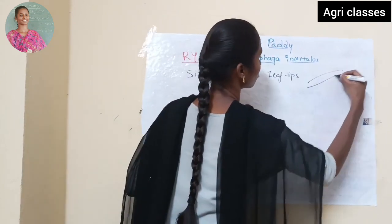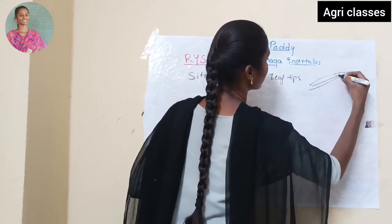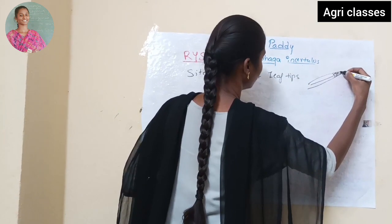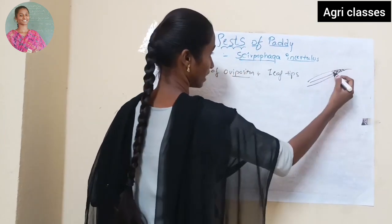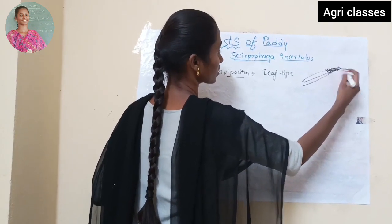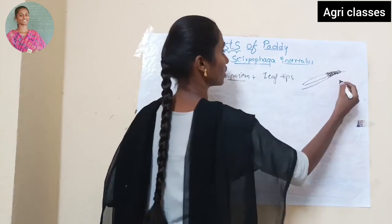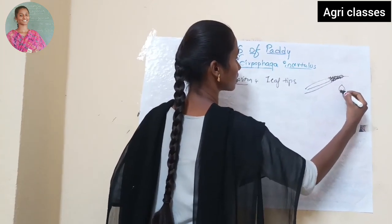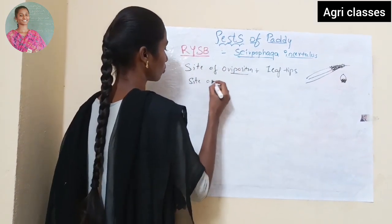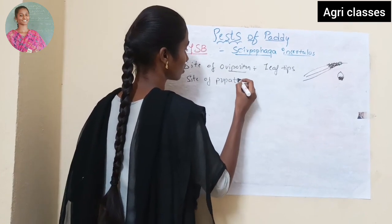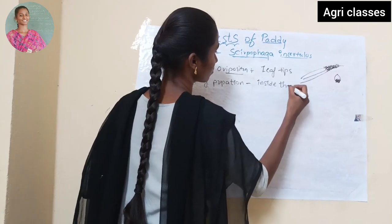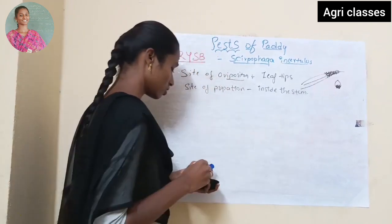The site of oviposition is on leaf tips. Here you can see the eggs on paddy — these eggs are covered with a tuft of hair. Remember that female moths have a tuft of hair on the abdomen. The site of pupation is inside the stem.